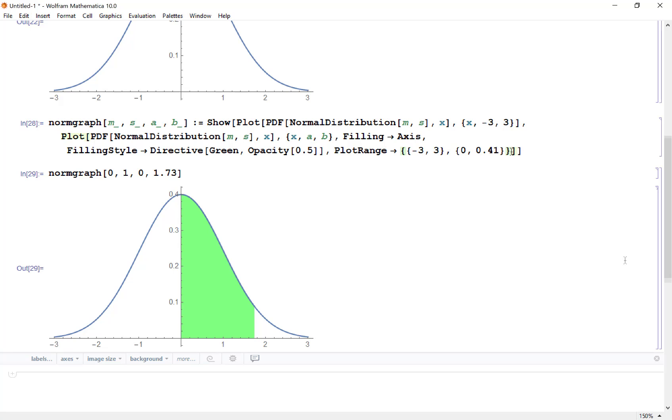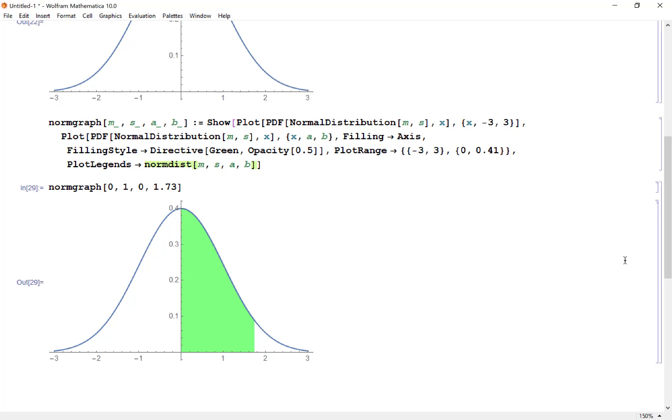All right, another thing I could do: let me add in plot legends and the plot legend I want is the normdist(m,s,a,b) and that way not only do I have the graph, I get the probability as well that we can see right here.